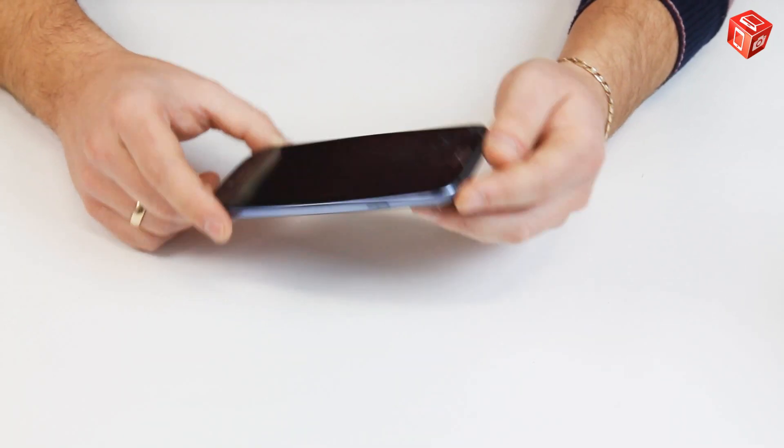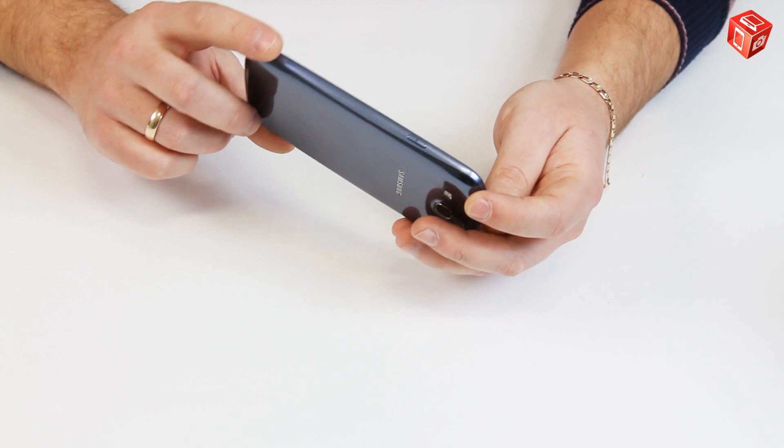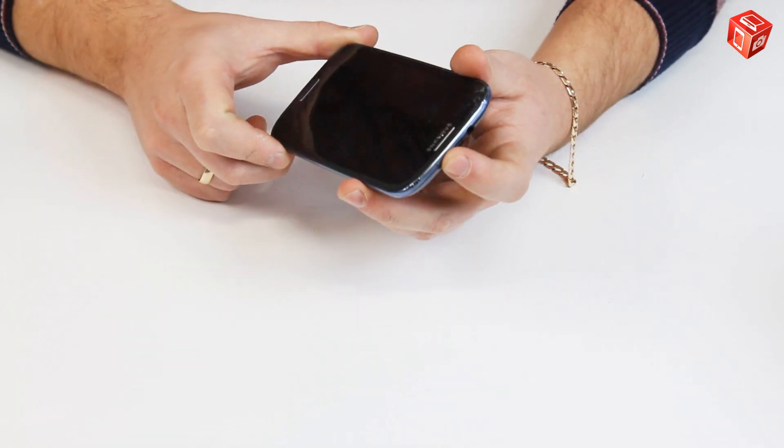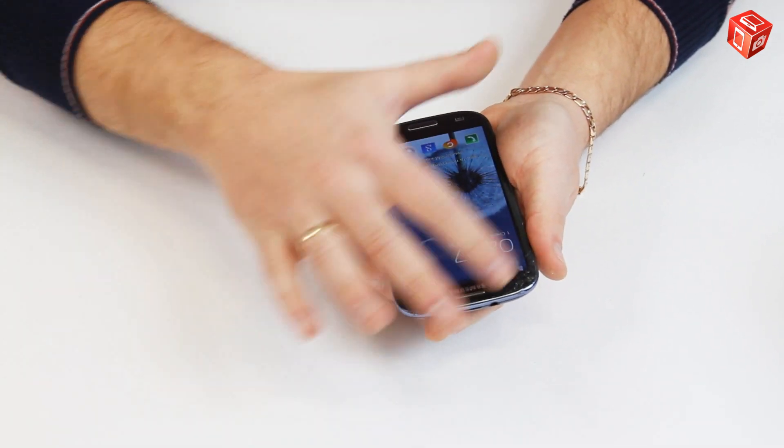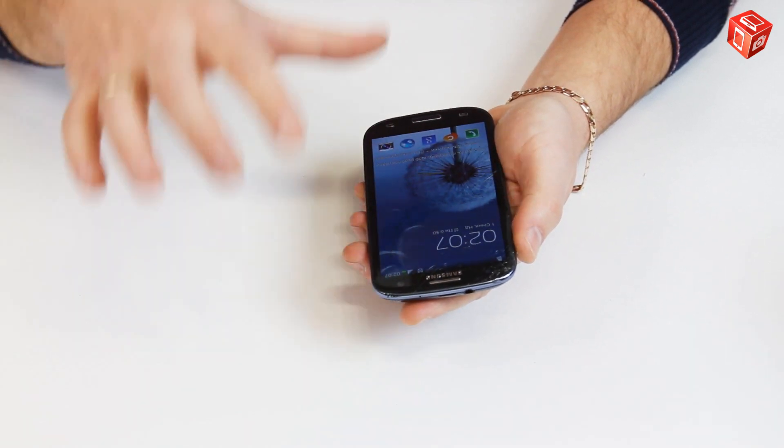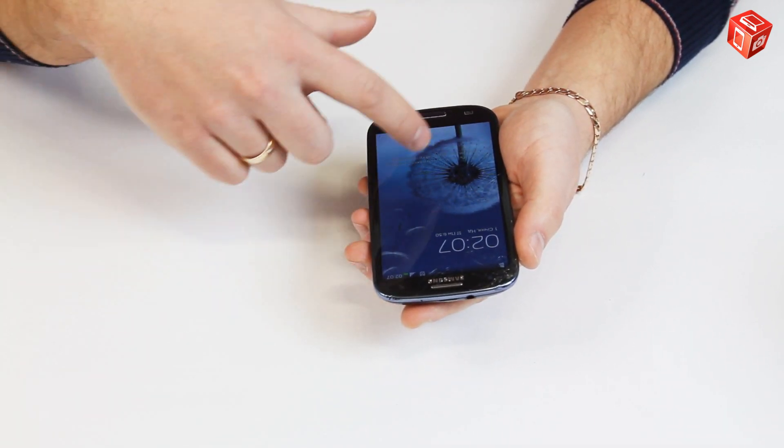Hello! Here we have Samsung Galaxy S3 i9300 cell phone with a broken glass. But the display and the sensor are working, as you can see.